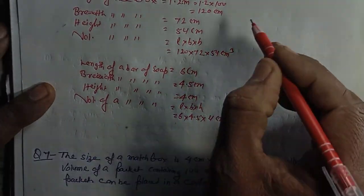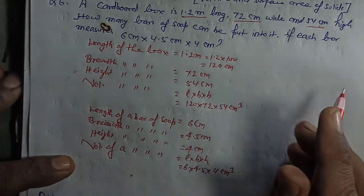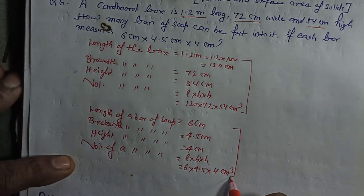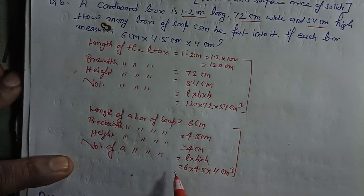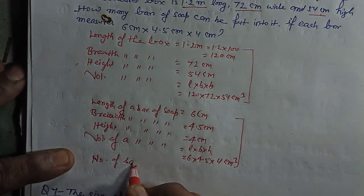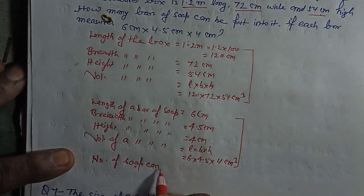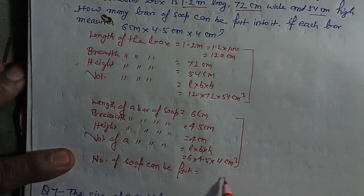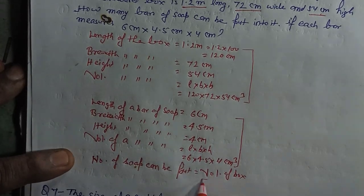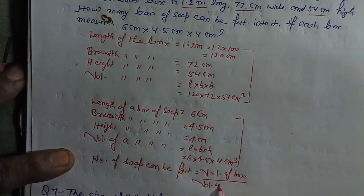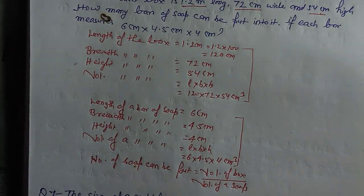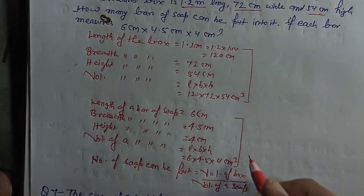After that — what is being asked here? In this box, how many soaps of this volume can be placed? So here, number of soaps that can be put is equal to volume of box upon volume of soap. This is a very easy way to solve this question — very easy. Now here is what you have to do.